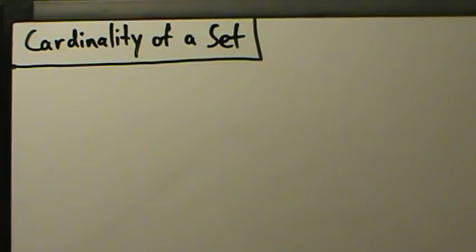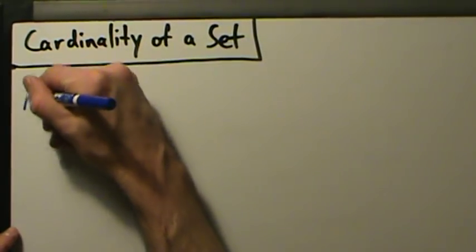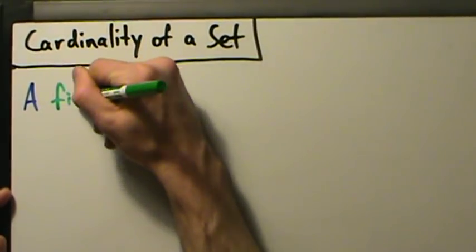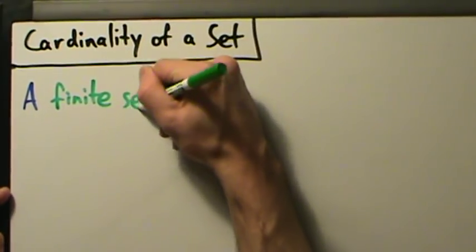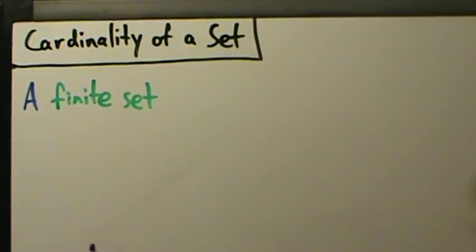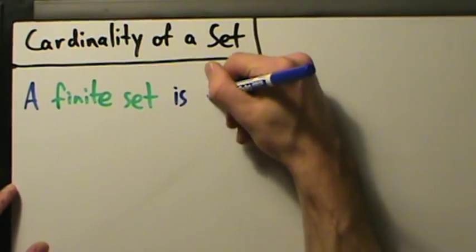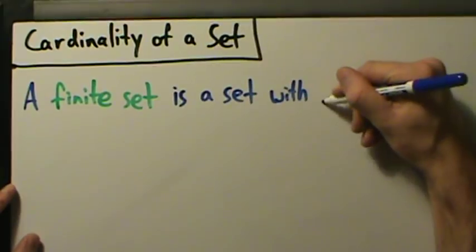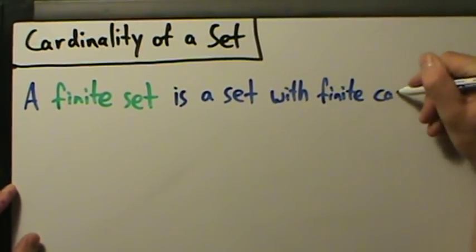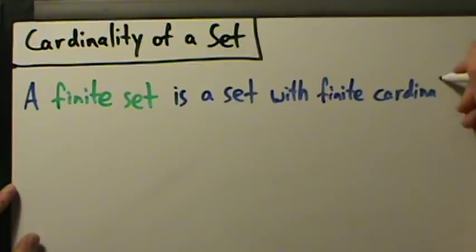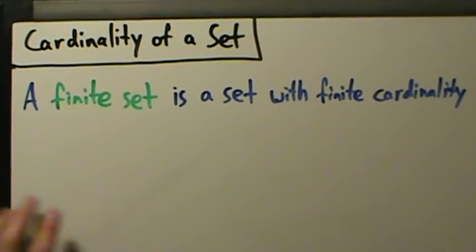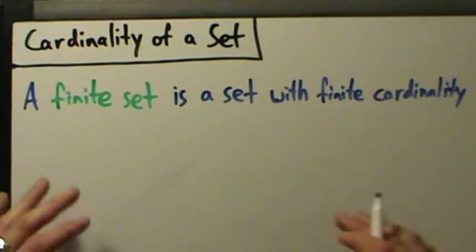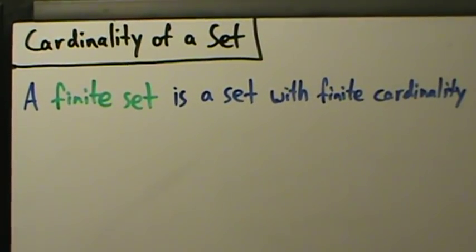We also have this notion of a finite set. A lot of the sets we've looked at so far, a lot of the examples we've done, have been examples of finite sets. A finite set is a set with a finite cardinality — so no huge surprises there. Cardinality is just the number of elements in a set, so a finite set is a set with a finite number of elements.